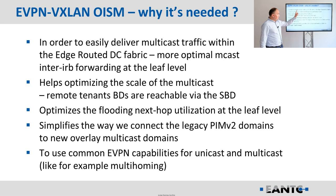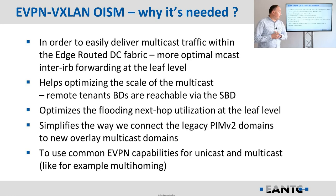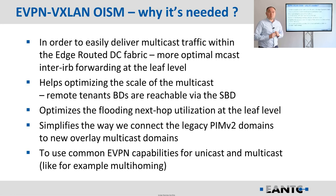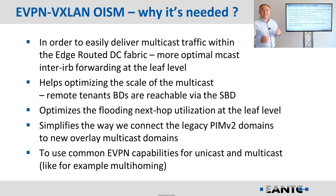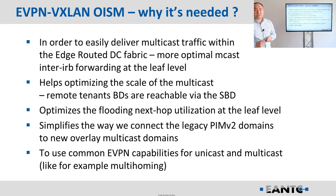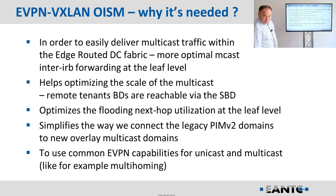With OISM, we also have the possibility to easily integrate a data center fabric with the existing core IP multicast network. The last point is to use common control plane capabilities for both unicast and multicast. In OISM, we are still using existing EVPN capabilities. From the control plane point of view, we are using route type 2 and route type 6 for the signalization part. There are no specific new route types for OISM itself — just a couple of flags and communities are added to support these capabilities.